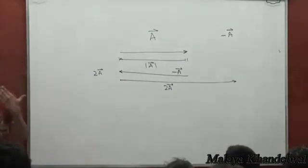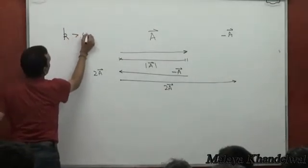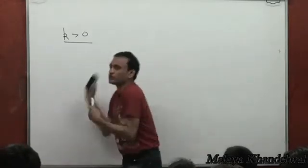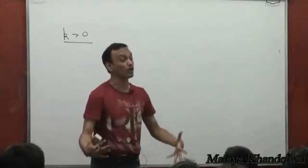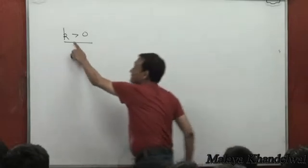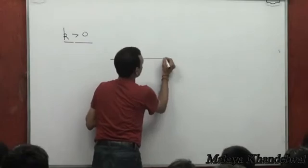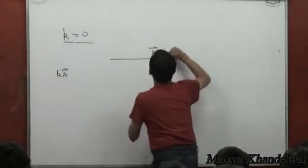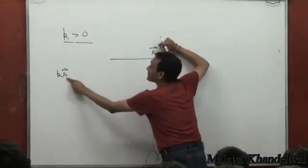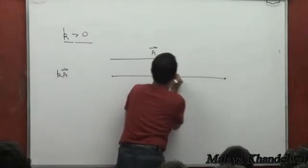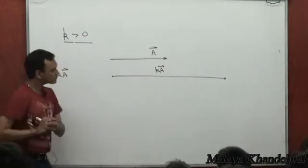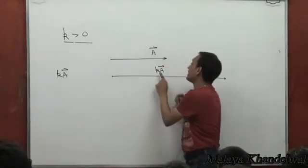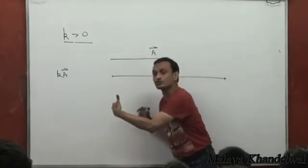In general, if K is a positive scalar and I have a vector A, then the vector K times A would be a vector K times as large as A and having a direction the same as A. Obviously, if K is less than 1, then the vector KA would be less than vector A. If K is greater than 1, then this would be a vector larger in magnitude compared to A.